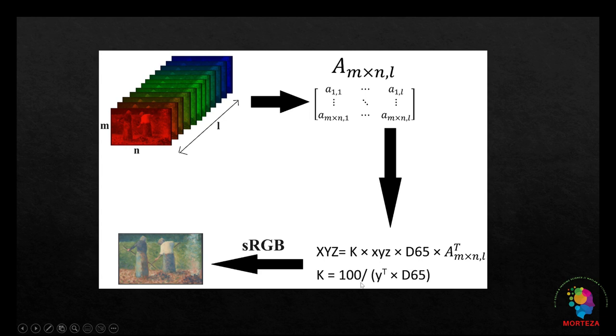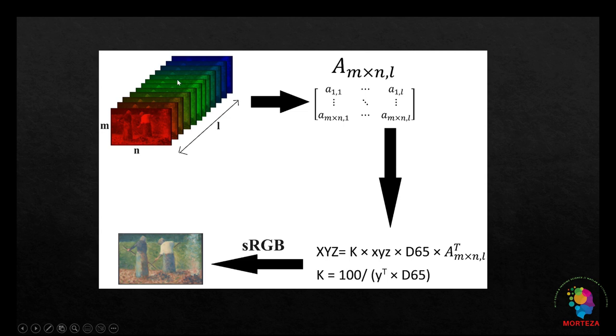After you obtain the CIE XYZ tri-stimulus values, you just simply turn it into sRGB image. So this is the best way to turn this big hyperspectral data into colorimetric data, which is the best way to visualize this data. Let's go to Python and see how we could do that.